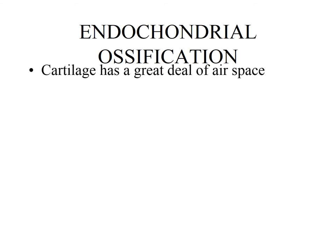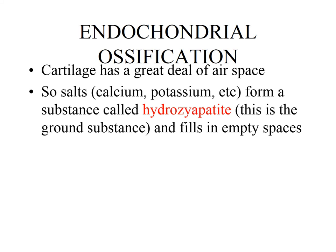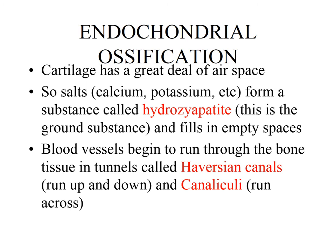Cartilage is connective tissue with a lot of airspace — loose connective tissue whose ground substance is like a gel. Bone is hard, so when ossification begins, salts such as calcium and potassium form a substance called hydroxyapatite. Think of it as the ground substance — the matrix. In cartilage the matrix is a gel; hydroxyapatite is like wet cement, made from many different minerals. When ossification begins (controlled by hormones), the hydroxyapatite fills in the empty spaces around the cartilage. At the same time, blood vessels begin to grow through tunnels called Haversian canals and canaliculi.